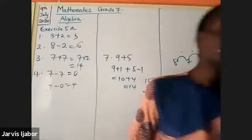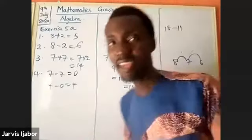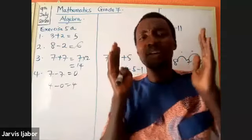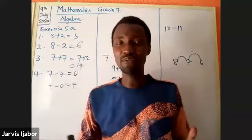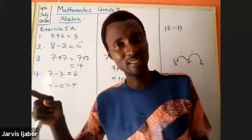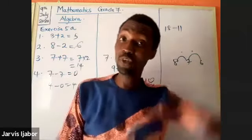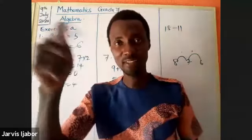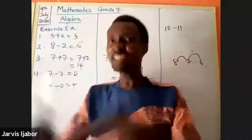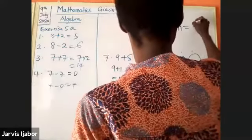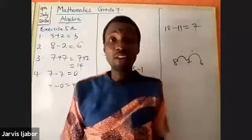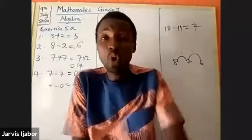The next question is eighteen minus eleven. There are different ways to approach it. I start from eleven and move to eighteen: twelve, thirteen, fourteen, fifteen, sixteen, seventeen, eighteen — I made seven steps, so the answer is seven. Or from eighteen, go backwards to eleven — either direction gives you the same answer.